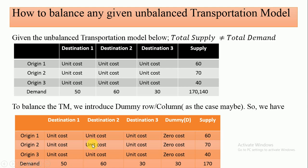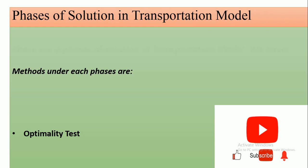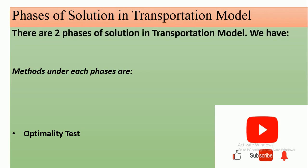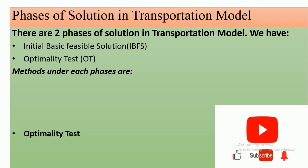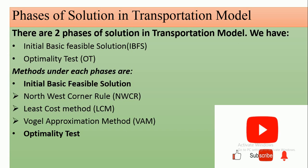This is how to make an unbalanced transportation problem a balanced one. Now let's look at the phases of solution in the transportation model. We have two phases: the Initial Basic Feasible Solution (IBFS) and Optimality Tests. Under IBFS, we have the Northwest Corner Rule, the Least Cost Method, and the Vogel's Approximation Method.